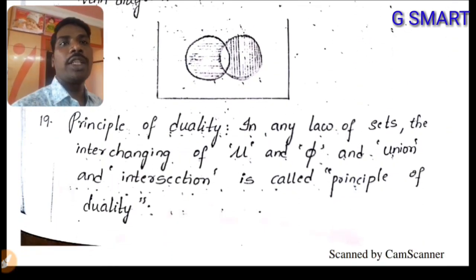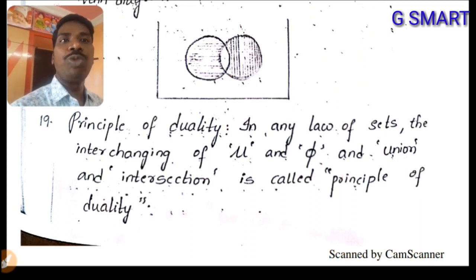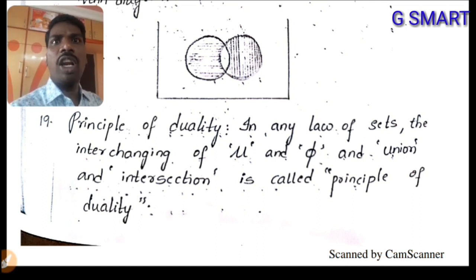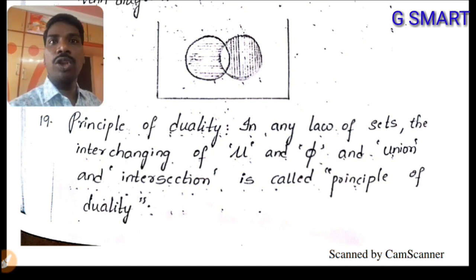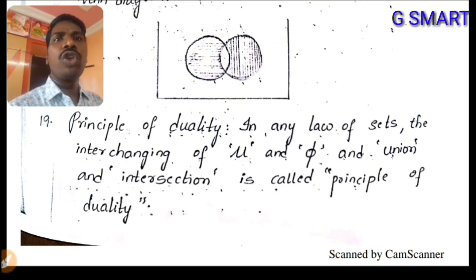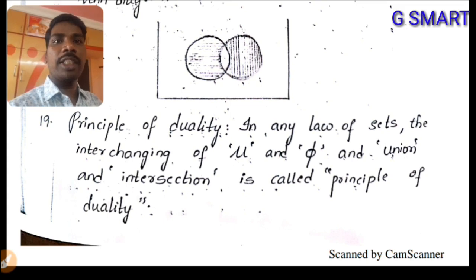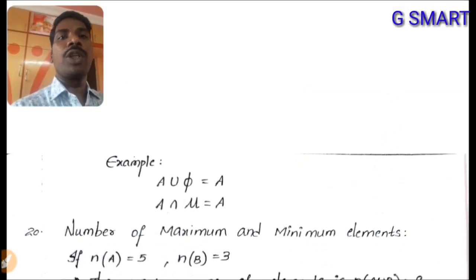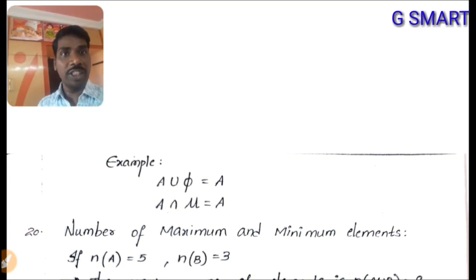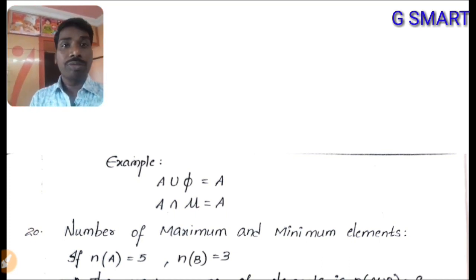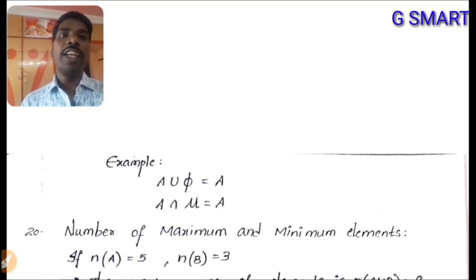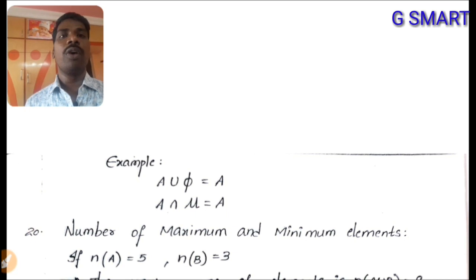Principle of duality: in any law of sets, interchanging μ and φ, and union and intersection, is called the principle of duality. Wherever you find μ, write φ; wherever you find ∩, write ∪. Example: A ∪ φ = A becomes A ∩ μ = A — both results are A, so the result doesn't change.